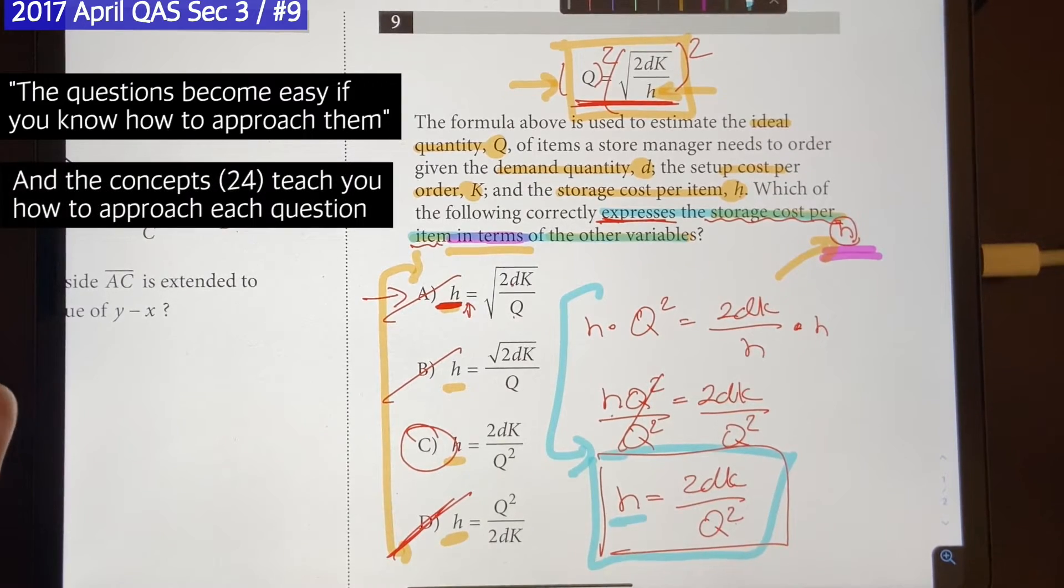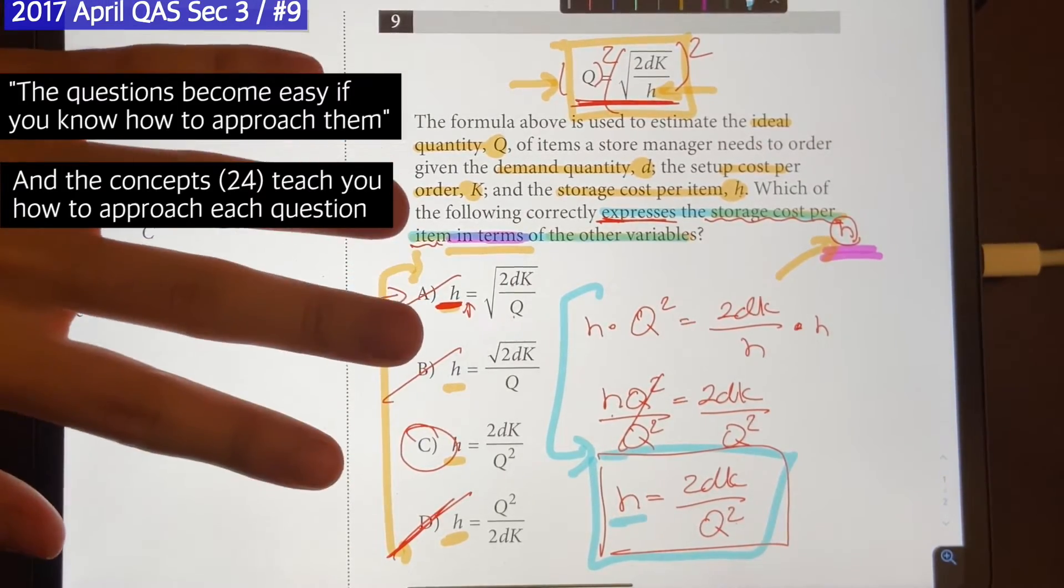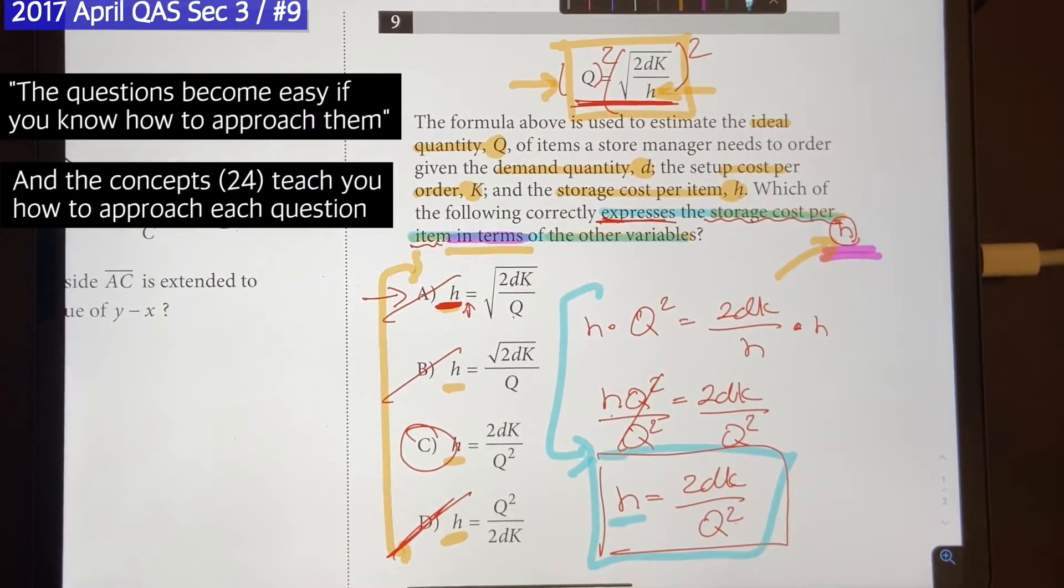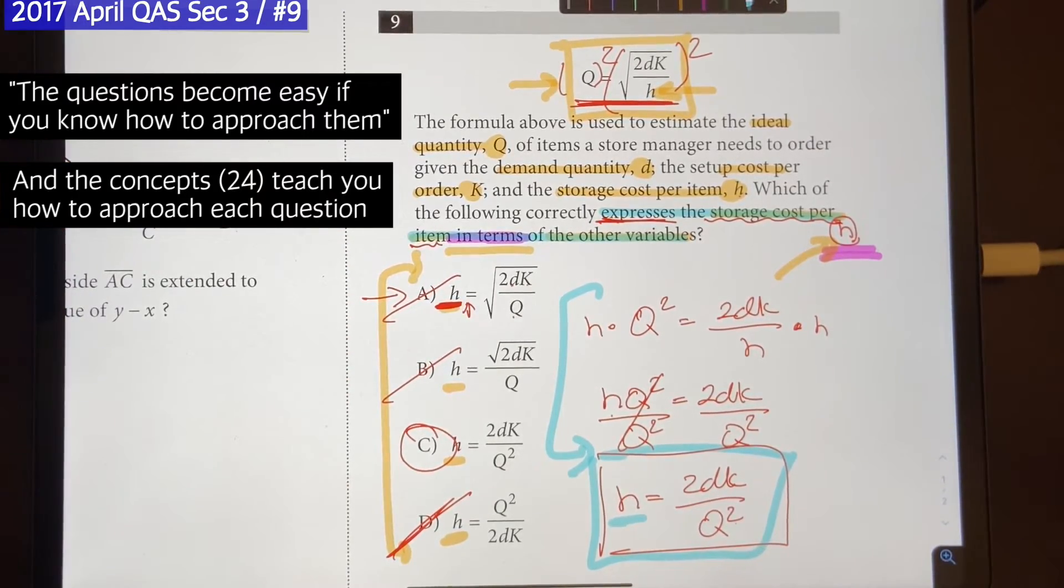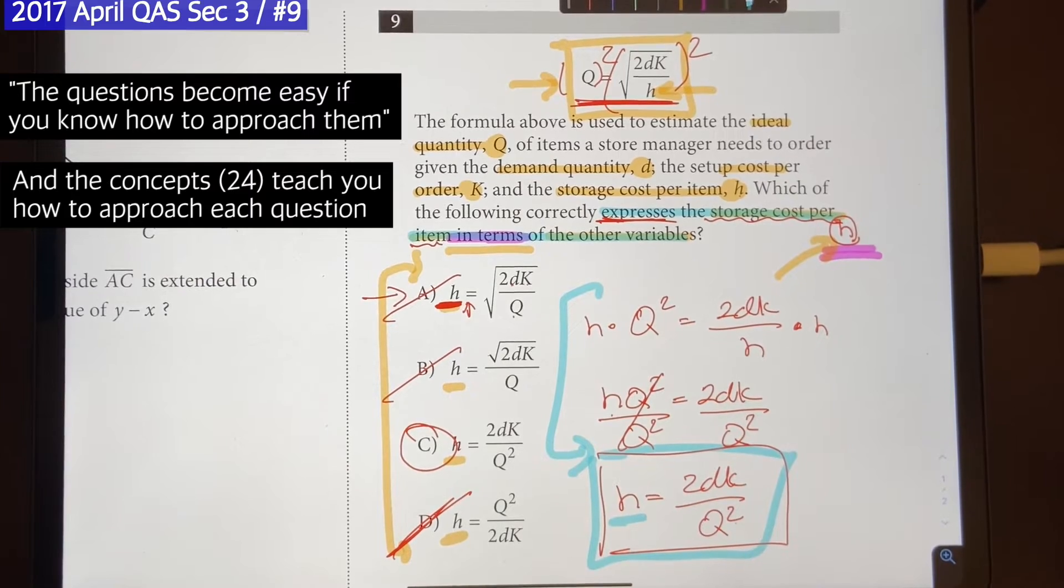At first, that might seem impossible and seems like a lot of work to do, but it's actually really not. Because on the SAT, there are only 24 concepts you have to know. And as long as you know those 24 concepts, you're going to know how to solve and approach every single question on the SAT. And the list of those 24 concepts are going to be listed on the SAT Math Accelerators information page, which is linked down below.